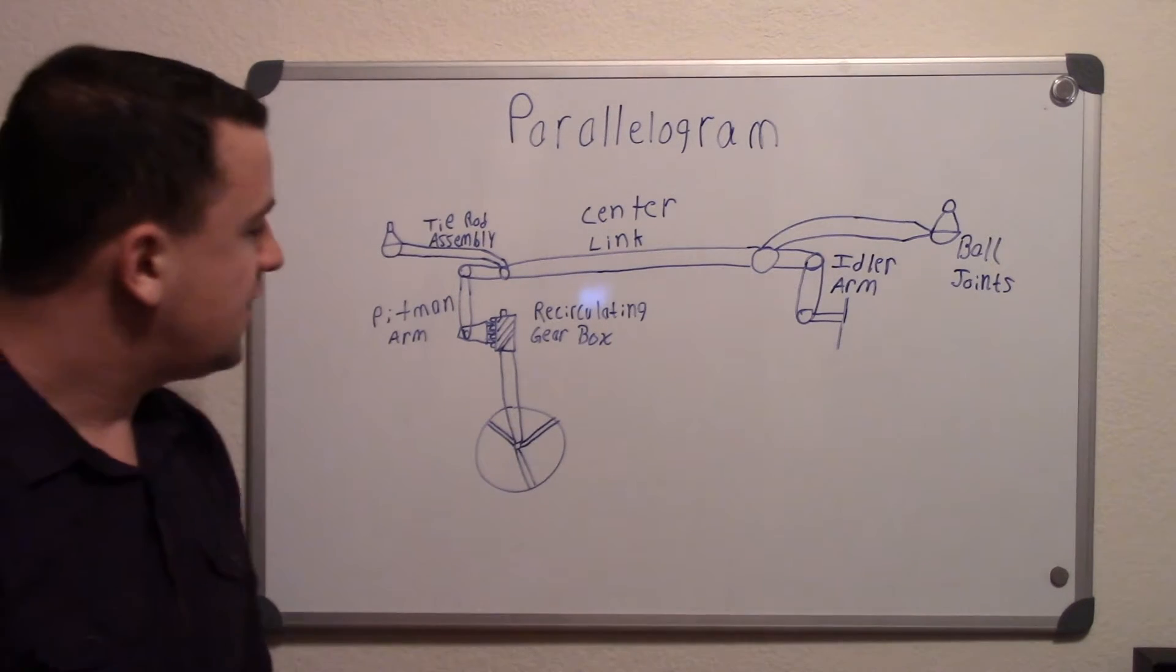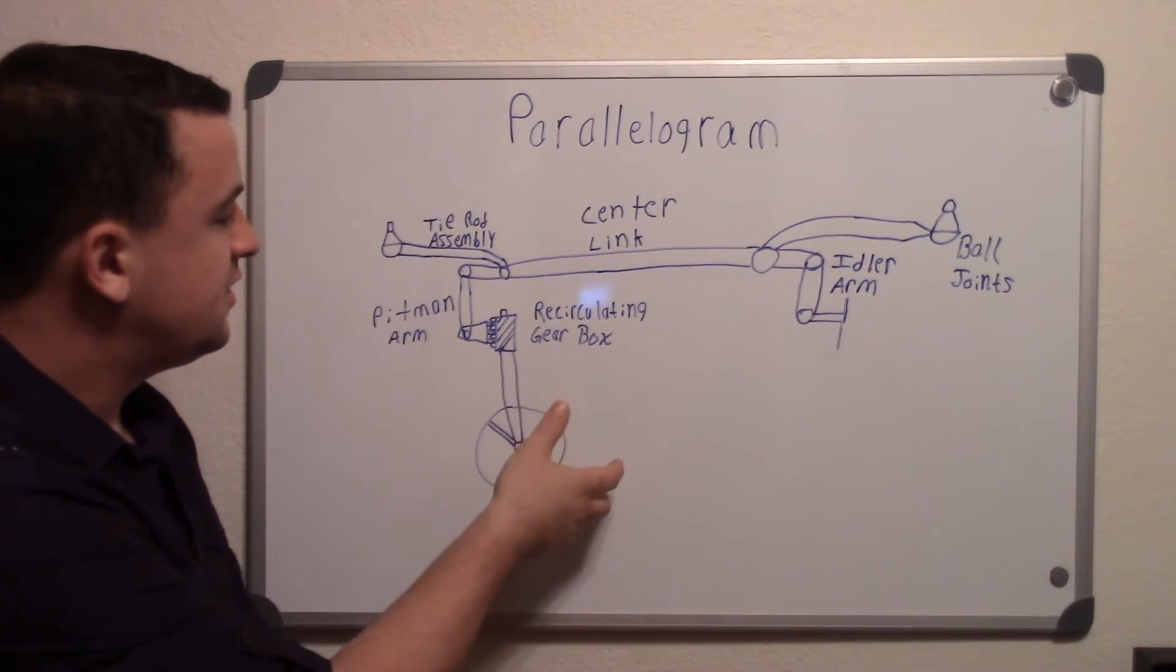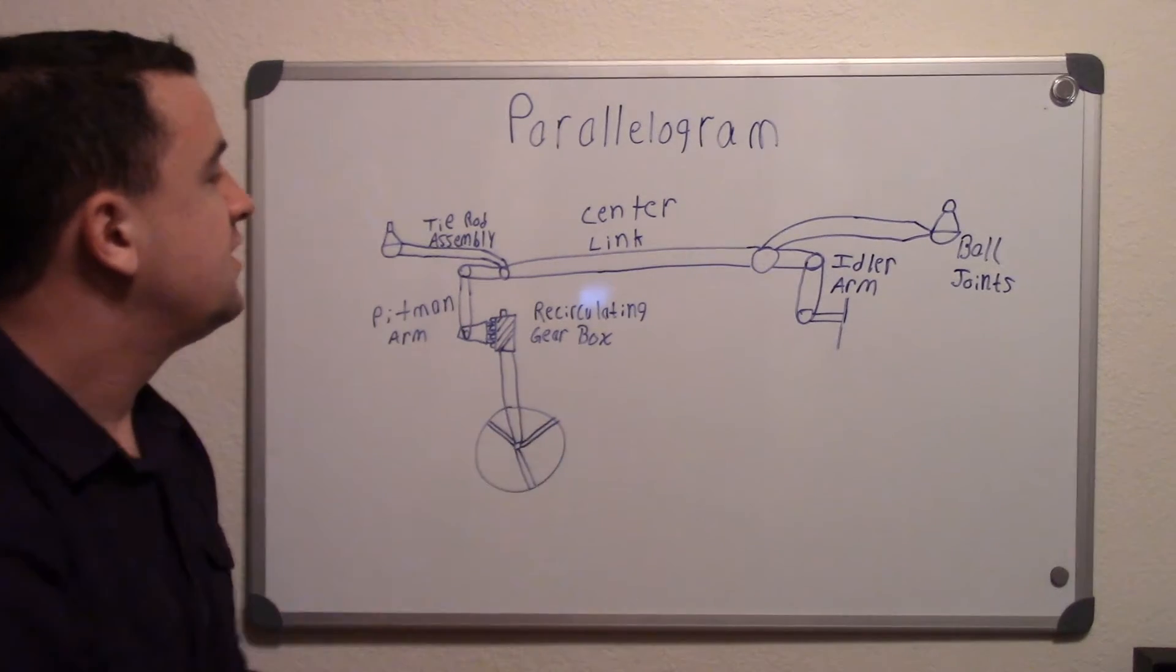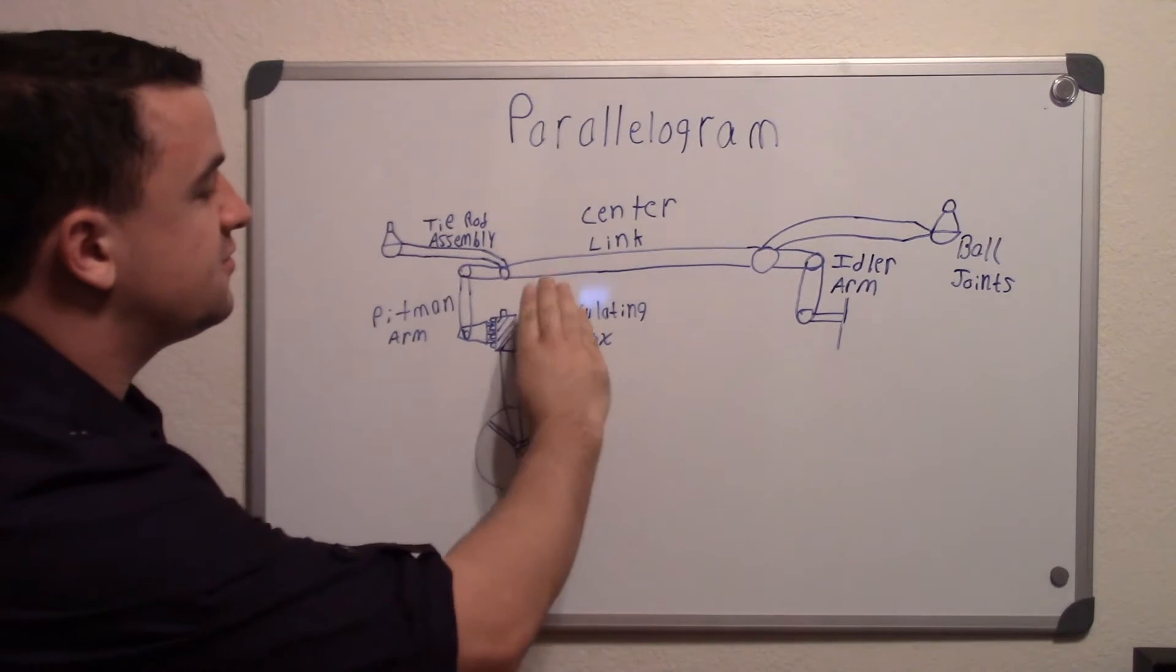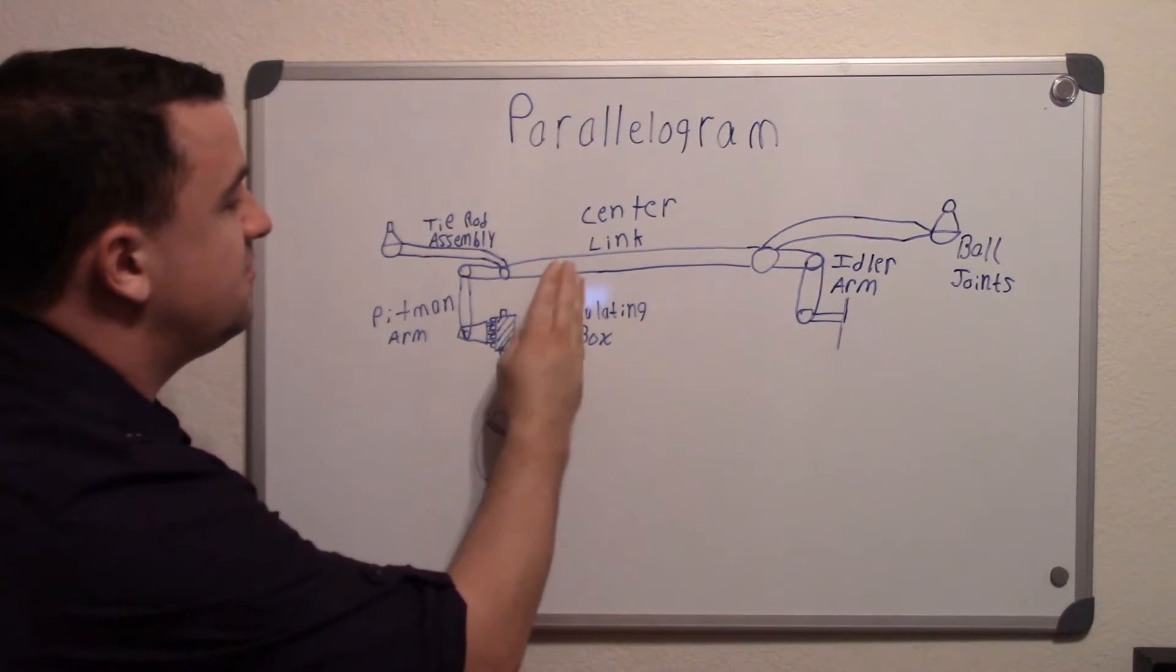Basically you've got your steering wheel which has a connection to a shaft, and this shaft goes into the recirculating gearbox. When you turn that steering wheel, this shaft here will start turning and it will even start moving a little bit with it.